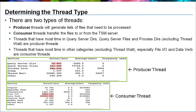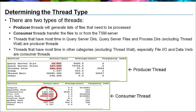Each client operation has two types of threads: producer and consumer. The producer threads are responsible for generating a list of files that need to be backed up or restored. The consumer threads do the data transfers to or from the TSM server. To identify the producer threads, look for threads that have most time in the Query Server Dirs, Query Server Files, and Process Dirs categories, excluding thread wait. To identify the consumer threads, look for threads that have the most time in other categories such as File IO or Data Verb, excluding thread wait.